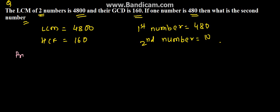We are aware of a rule. Product of two numbers, whenever two numbers are given and the LCM and GCD or HCF is given, we can use this formula: product of two numbers is equal to the product of HCF and LCM.